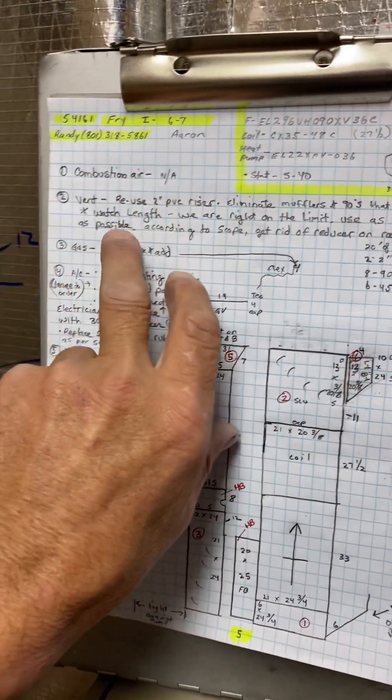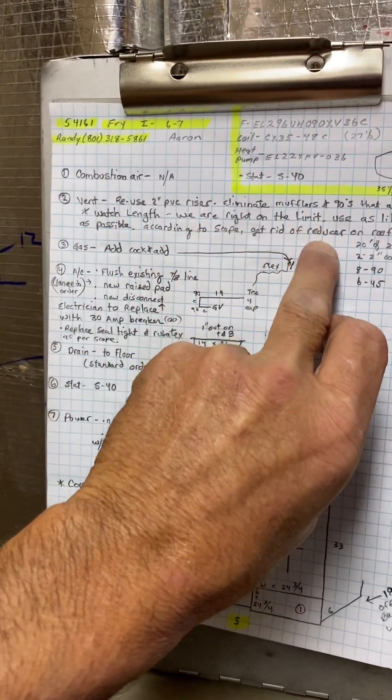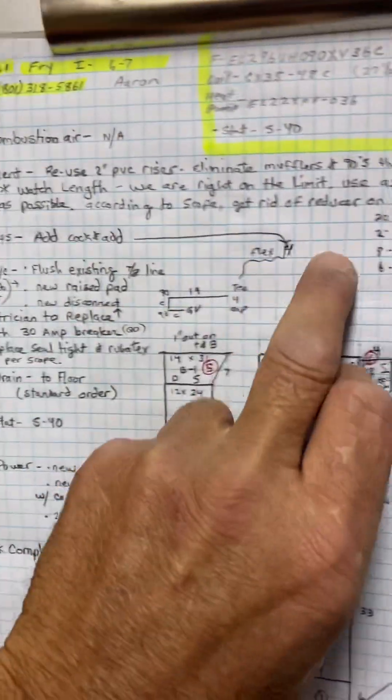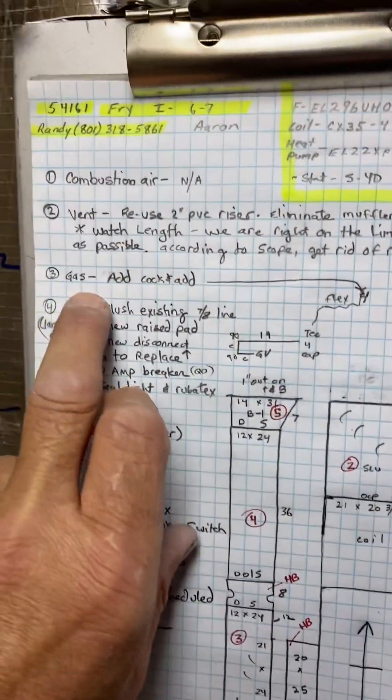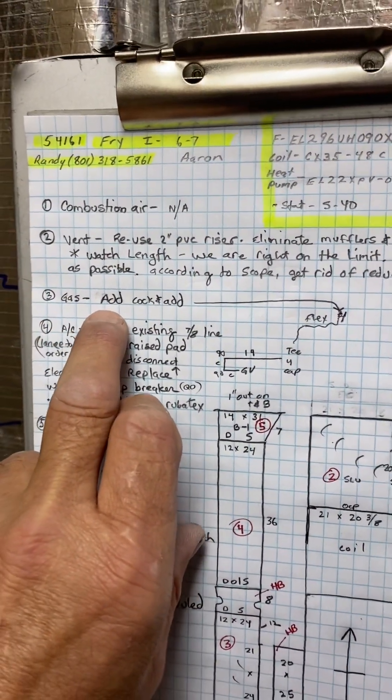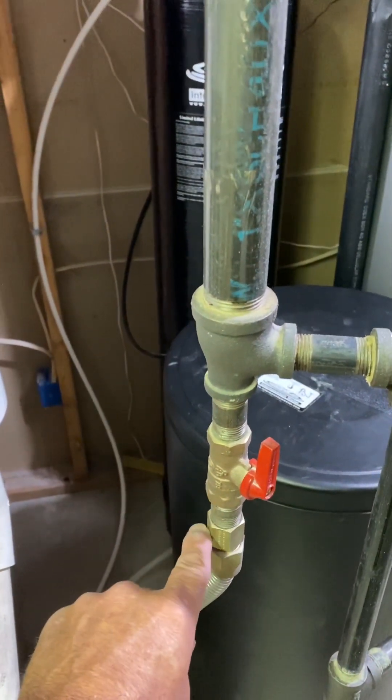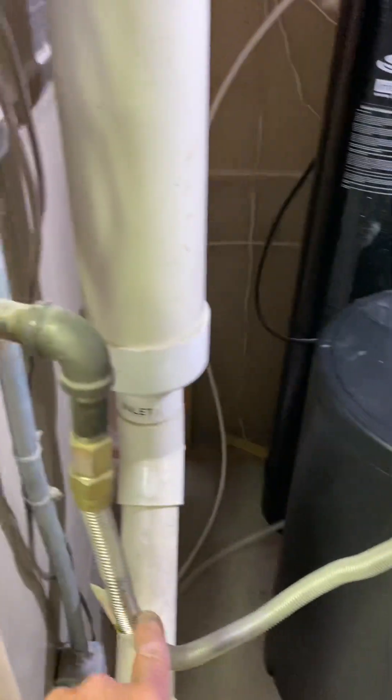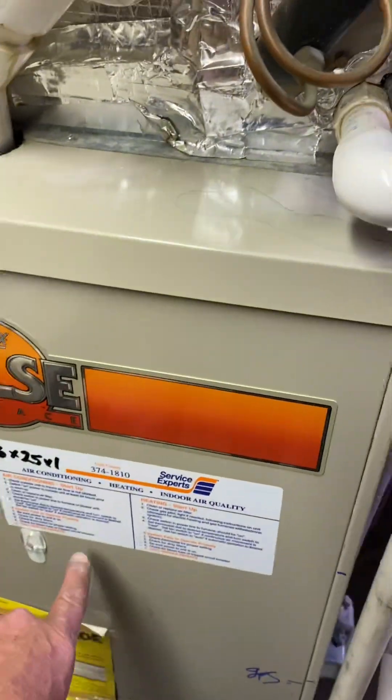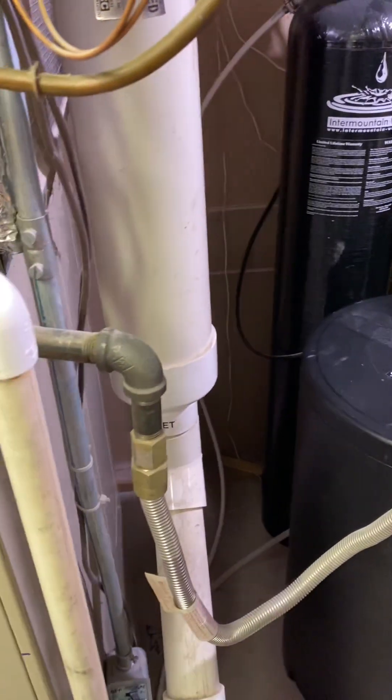As per scope. So on your gas, you're going to add a new cock here. And then two. Then you're going to add a flex. And out of the furnace, just your norm. And then a flex to connect them.